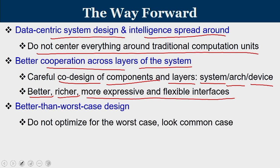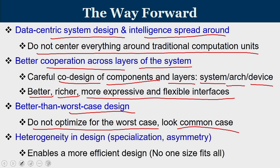We should move toward better-than-worst-case design. We always design for the worst case — the worst traffic that could occur — but this worst case happens rarely. We should focus our designs on the common case. Additionally, heterogeneity in design — rather than keeping everything homogeneous — means thinking about co-design of various components. Some components are used for certain categories of applications while other components take a dominant role for different classes of applications.